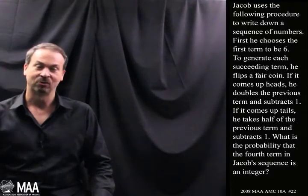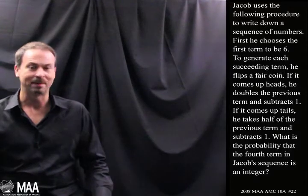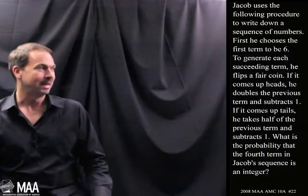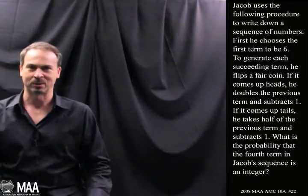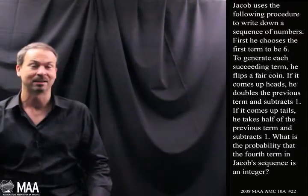Jacob uses the following procedure to write down a sequence of numbers. First he chooses the first term to be 6. To generate each succeeding term, he flips a fair coin. If it comes up heads, he doubles the previous term and subtracts 1. If it comes up tails, he takes half of the previous term and subtracts 1.